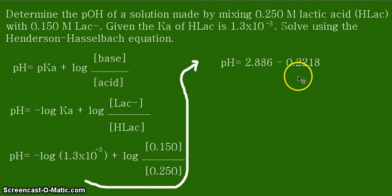The logarithm of the quotient of our concentrations is equal to negative 0.2218. So from a plus, it now becomes a minus here. And the negative logarithm of our Ka, which is 1.3 times 10 to negative 3, is equal to 2.886. So we have 2.886 minus 0.2218.